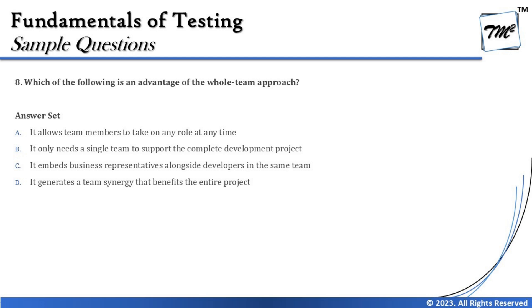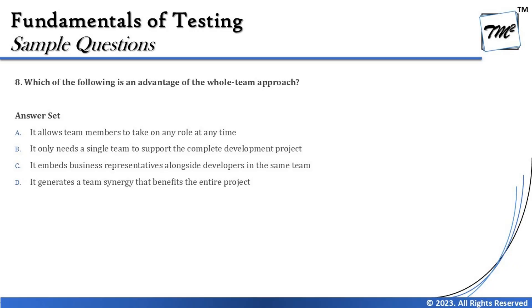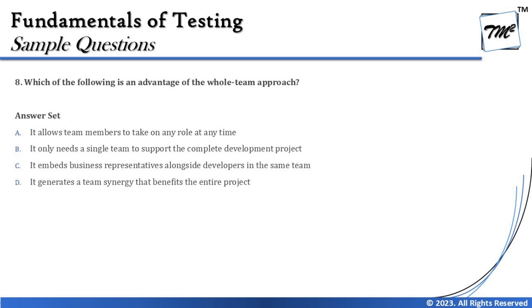Option D says it generates a team synergy that benefits the entire project. That totally makes sense — it creates synergy, which is one of the key benefits of the whole team approach. This leads to better trust, better collaboration, and better communication among team members, which brings value to the entire organization. So the right answer for question eight is D: it generates a team synergy that benefits the entire project, which is an advantage of the whole team approach.